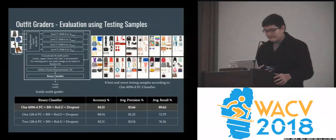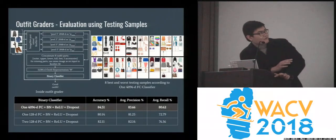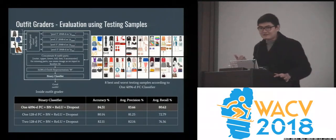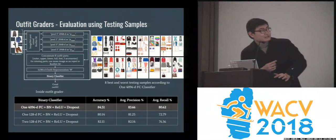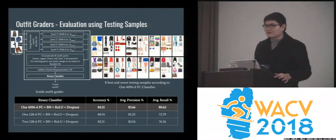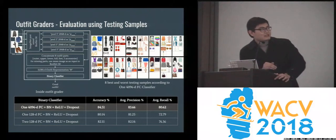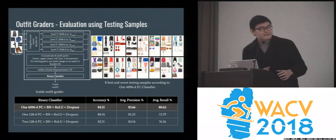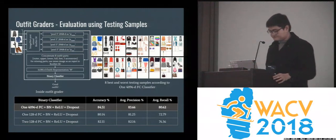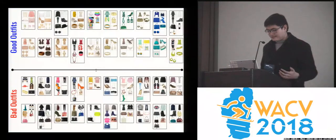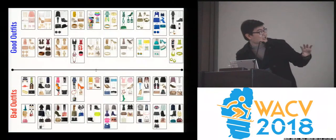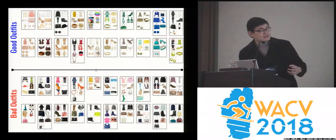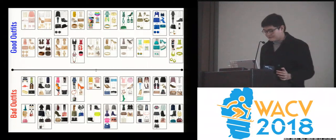Here are the results. You can see some outfits on the right — details are on the poster. The upper row shows positive outfits, rated good by our outfit grader; the lower row shows bad ones. We tried three models, and the best achieved around 85% accuracy. The upper outfits look nicer in terms of style and color, while the lower ones are randomly assembled.